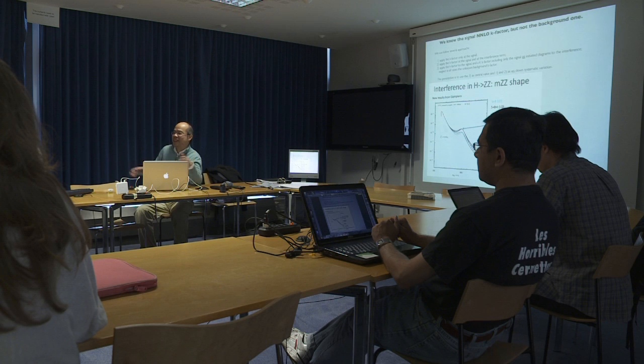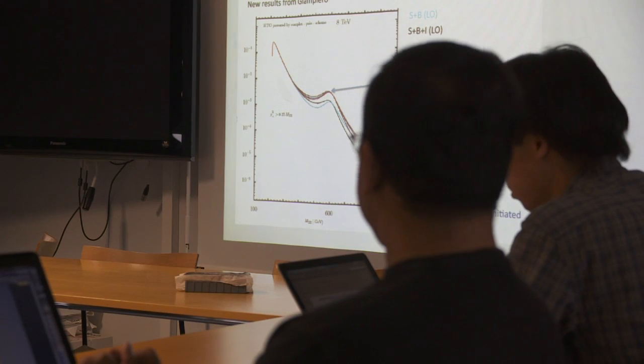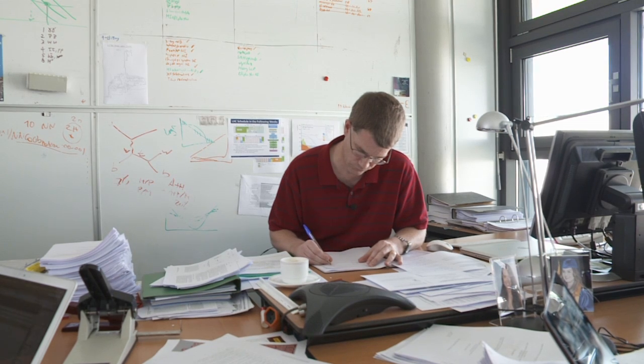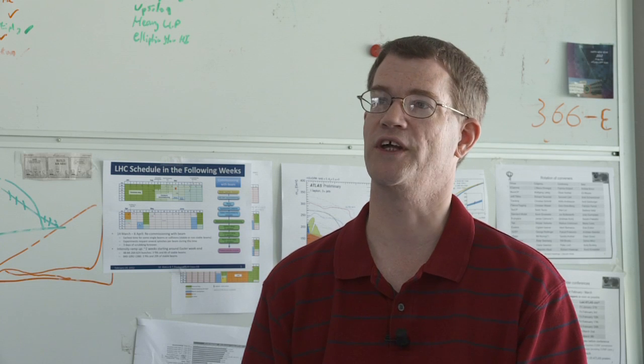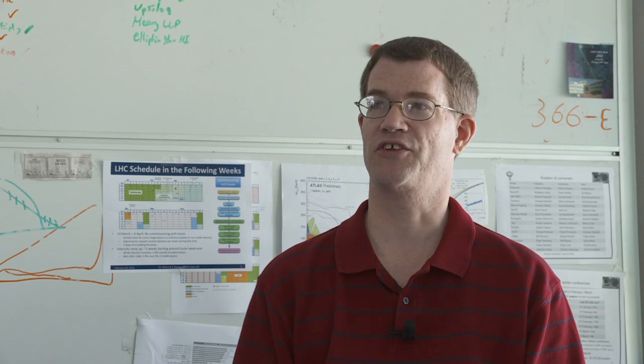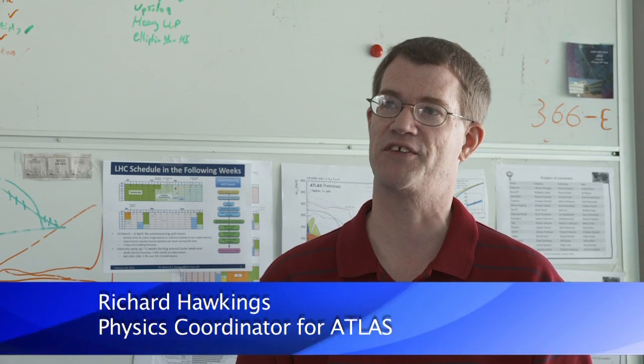Then comes the data analysis, where the physicists search these events, looking for gems in a pile of rubble. So physics analysis is the process of taking the billions of events that we've recorded and trying to look for patterns, to sift through them, to look for interesting events, to look for unusual events, and to look for patterns like a clustering of events in mass.